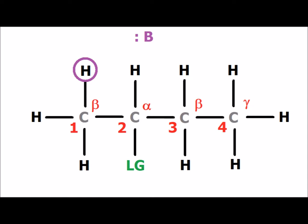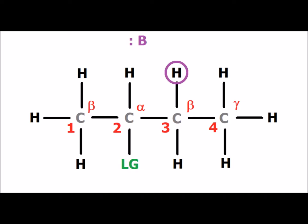We have circled, in purple, one possible beta hydrogen that could be abstracted by base during an E2 reaction. Here is another possible beta hydrogen, but now attached to a different carbon, the number 3 carbon.